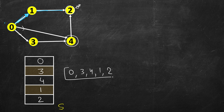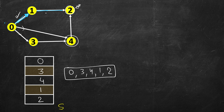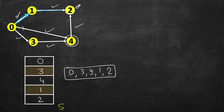Let's verify this is a valid topological order across all 6 edges. Edge 0→1: 0 comes before 1. Edge 1→2: 1 before 2. Edge 0→4: 0 before 4. Edge 4→2: 4 before 2. Edge 3→4: 3 before 4. Edge 0→3: 0 before 3. All edges are satisfied, so 0,3,4,1,2 is a valid topological sort.